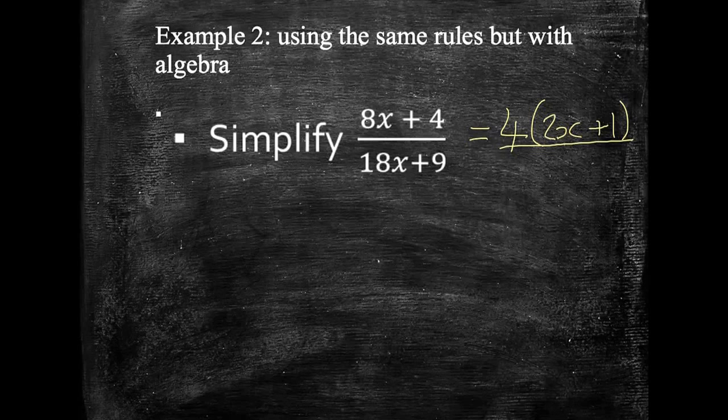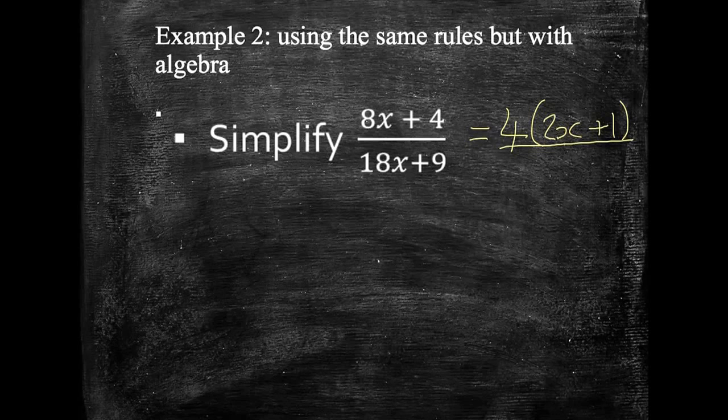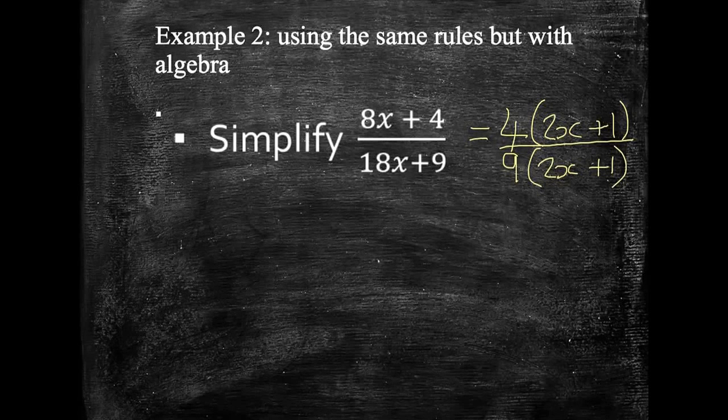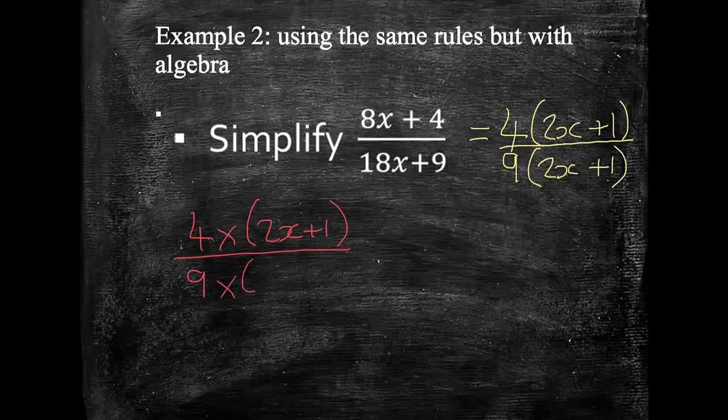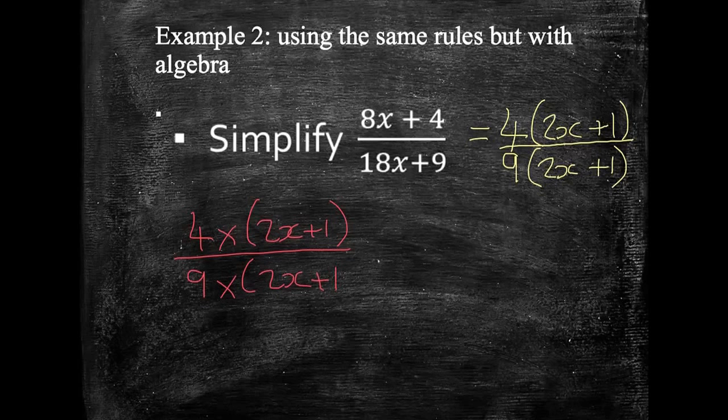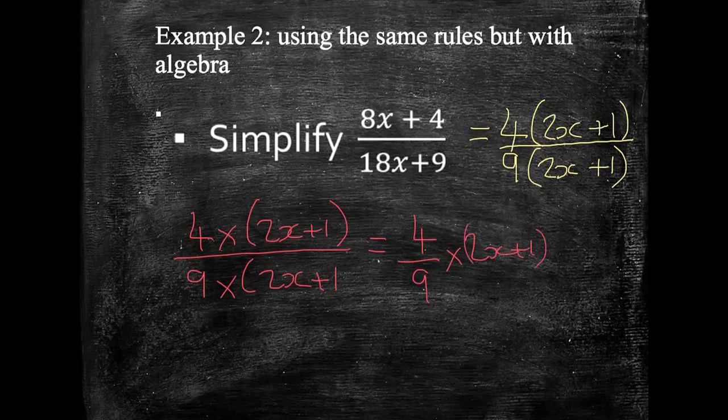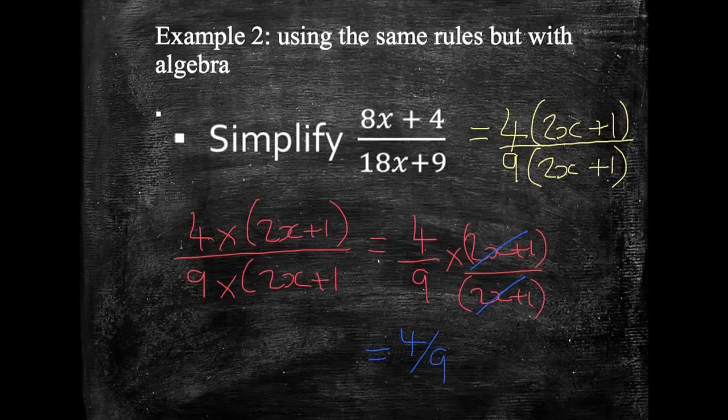Let's look at the bottom part of my fraction. Again, I'm thinking what's the biggest factor that goes into 18x and 9. And 9 does. 9 goes into this 2x and 9 goes into 9 once. Hopefully, at this point, you can see that what we've got is 4 lots of 2x plus 1 divided by 9 lots of 2x plus 1. So, that's the same as 4 ninths multiplied by 2x plus 1 over 2x plus 1. Which is the same as saying that these can cancel out to just give us 1, which gives us our final answer of 4 ninths.